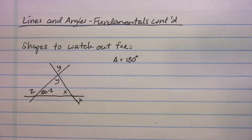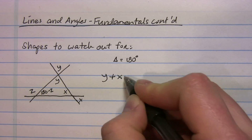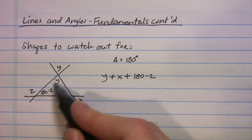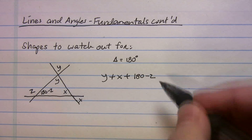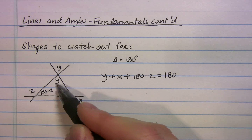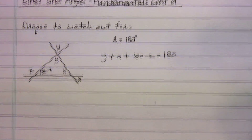With those angles filled in, you can set up an equation: y plus x plus (180 minus z) equals 180, because all interior angles of a triangle sum to 180. I'm not going to solve it here, but the point is you should be able to set up that equation using the intersecting lines and triangle rules together.